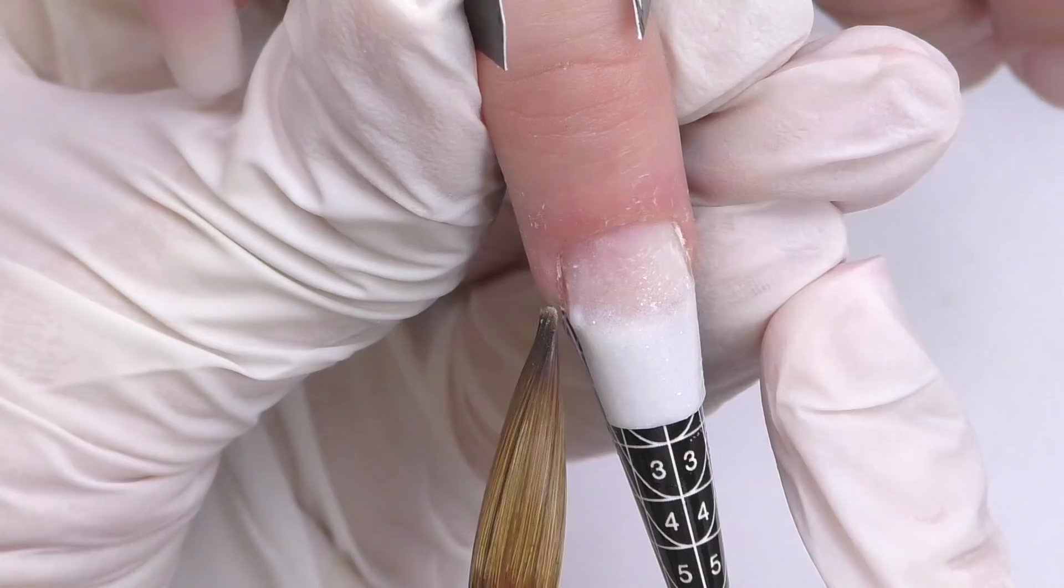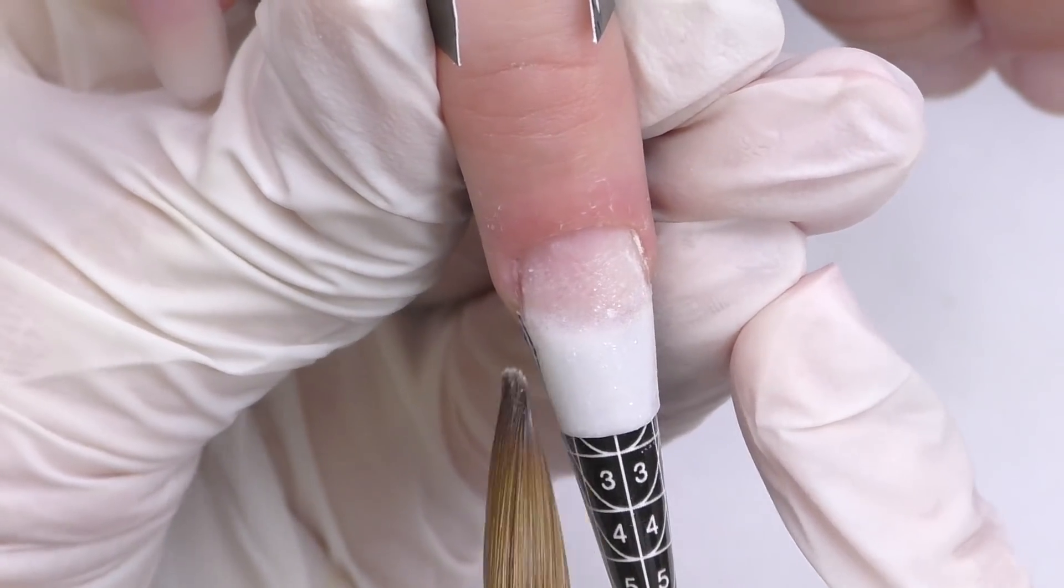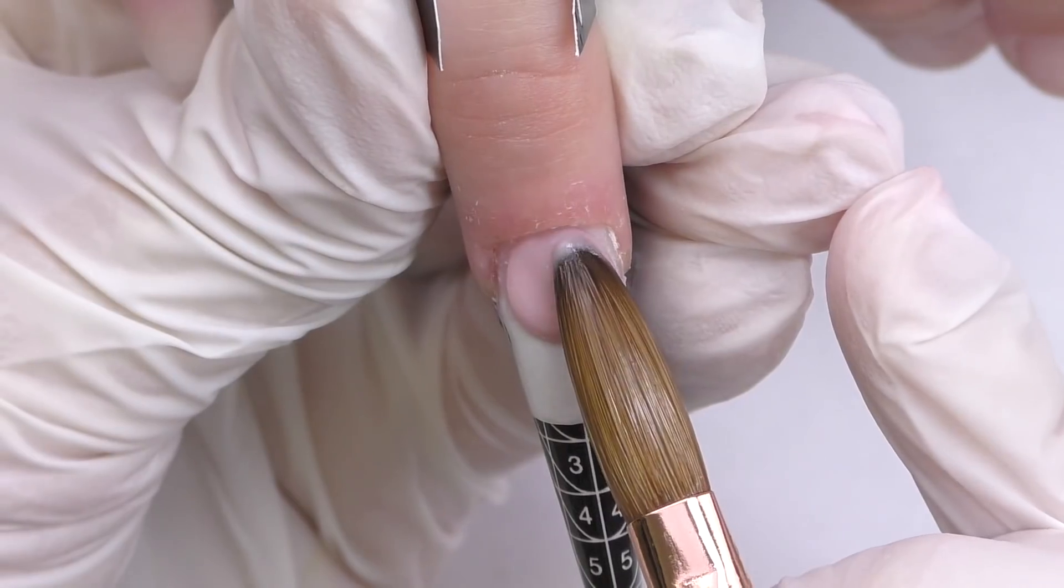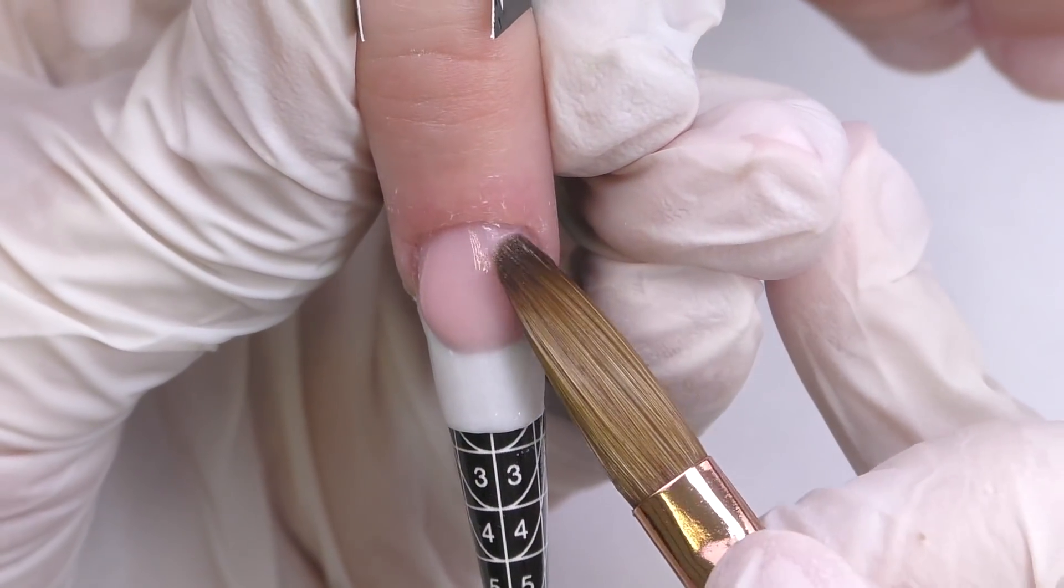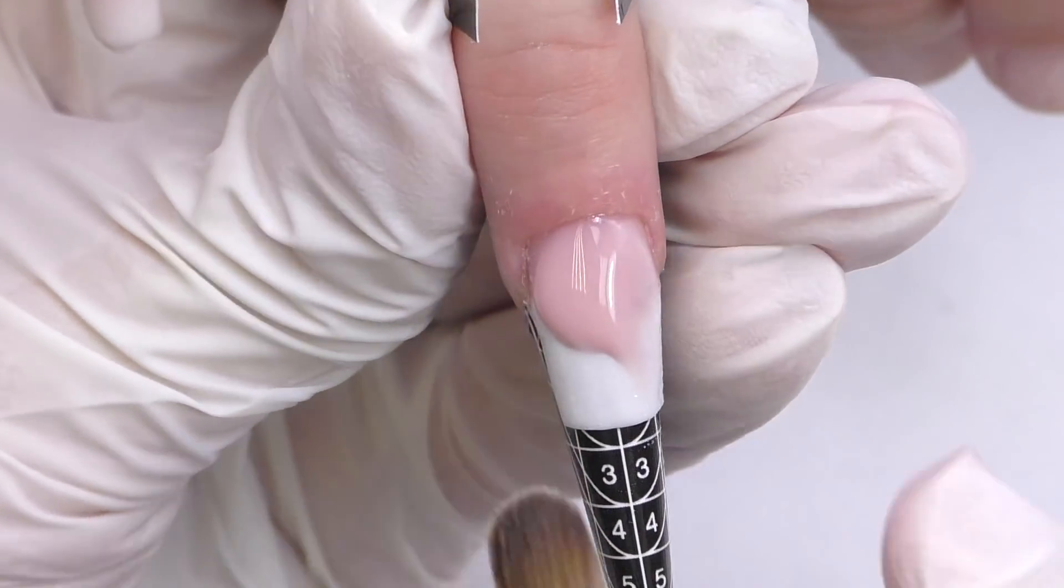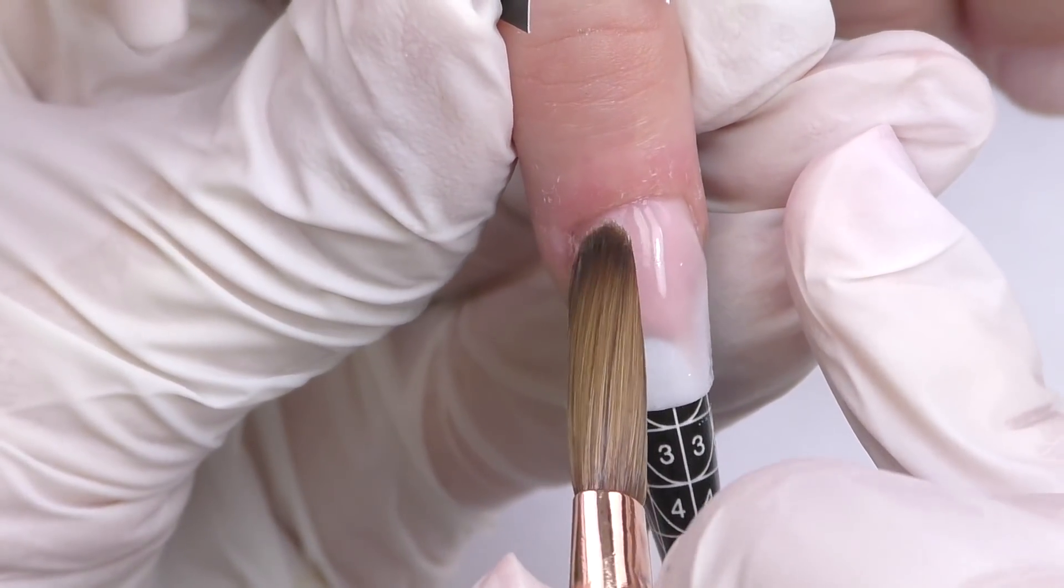And now, before it fully sets, you need to apply a nude color near the cuticle and carefully fade it towards the free edge. But do not cover the entire white part because we still need it on the free edge.